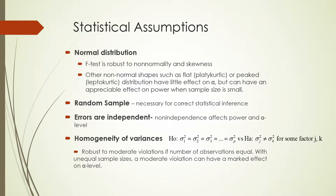Second, you need a random sample in order to make the correct statistical inference from your sample to your population. Third, we assume that errors are independent — that the deviation of an observation from its group mean is independent of all other deviations. Where you can get into trouble is with pseudo-replication: if you really only have one experimental unit but measure it several times, your errors will often be smaller than expected from completely independent samples.